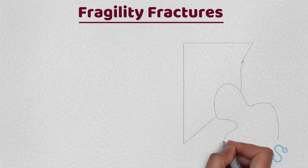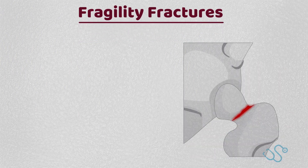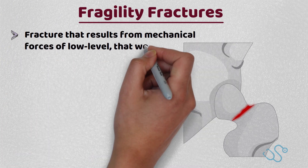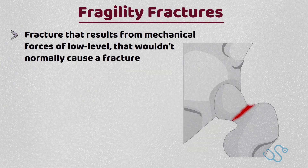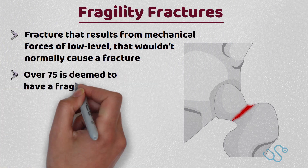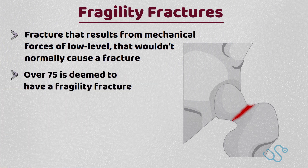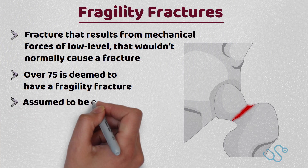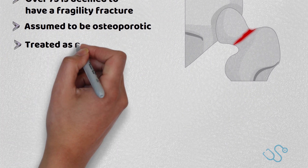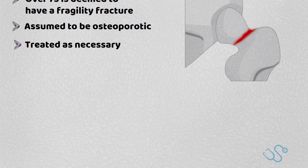The reason why osteoporosis is so important is in relation to fragility fractures, which the World Health Organization defined as a fracture that results from mechanical forces of such low level that wouldn't normally cause a fracture. Thus, if a patient over 75 is deemed to have a fragility fracture, they are essentially assumed to be osteoporotic and should be treated as necessary without a DEXA assessment.